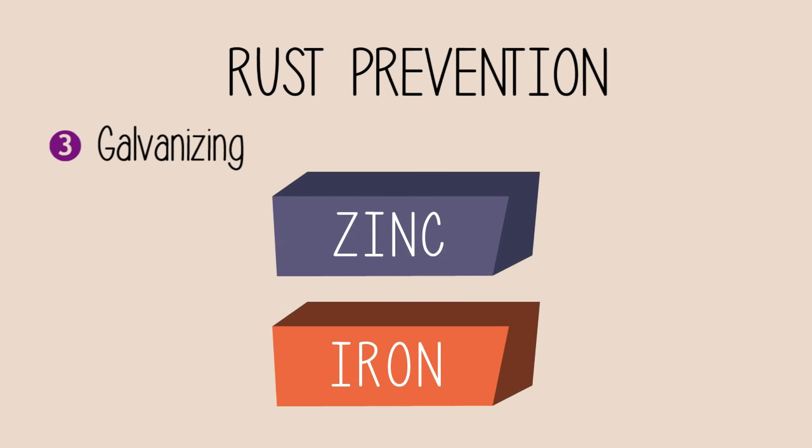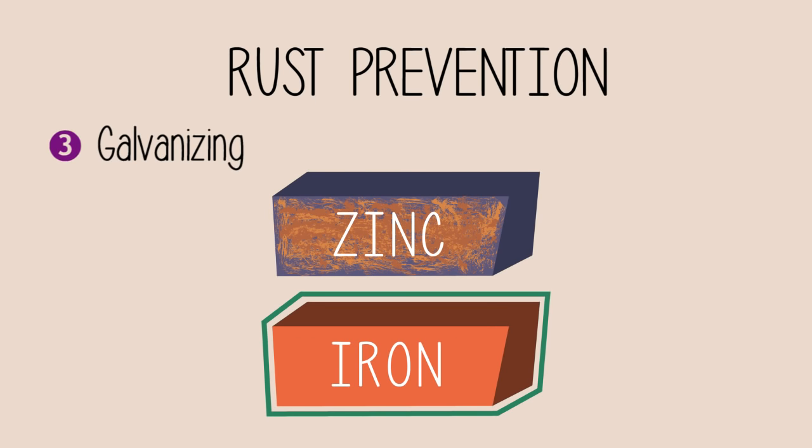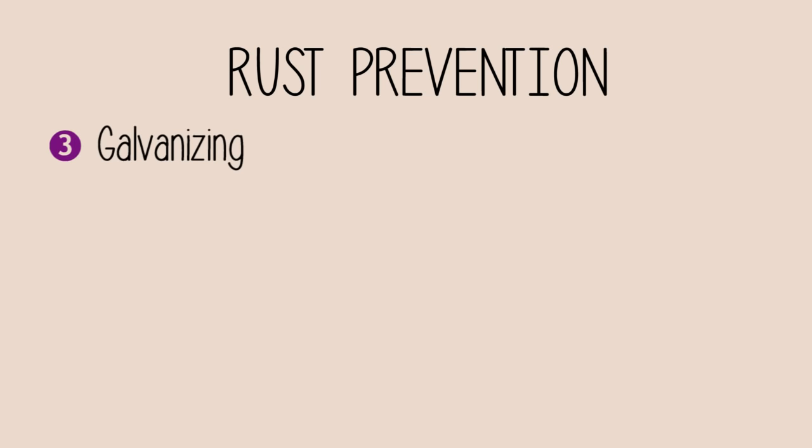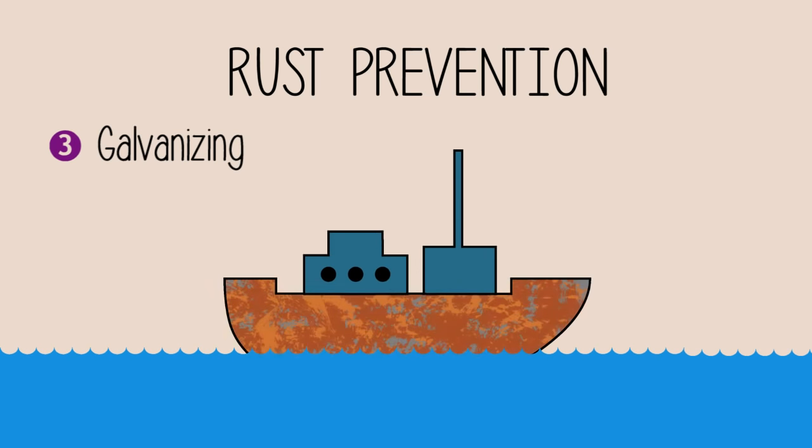So if we put them together, zinc protects iron but is sacrificing itself, hence the term sacrificial protection. This method is applied to prevent rusting on ships.